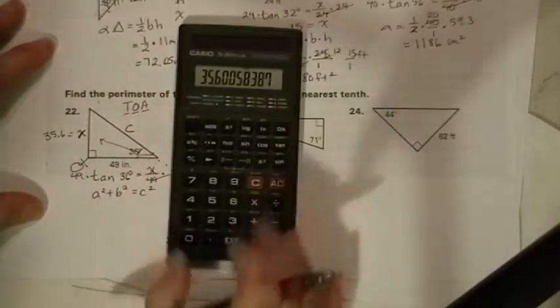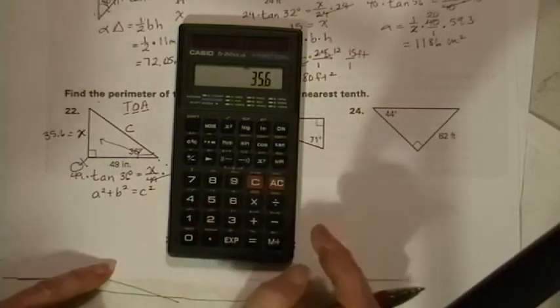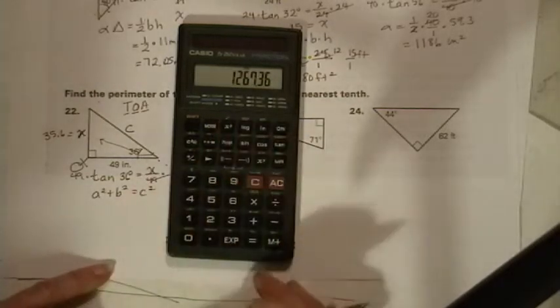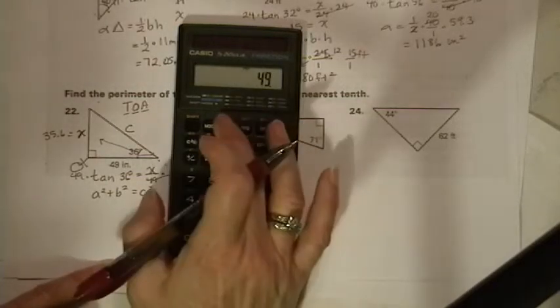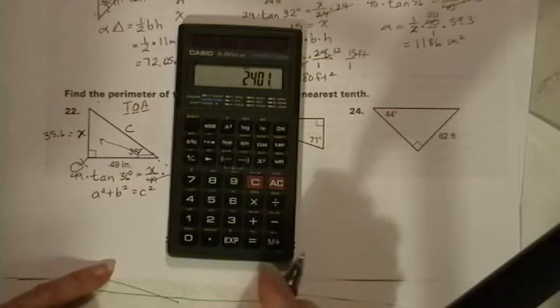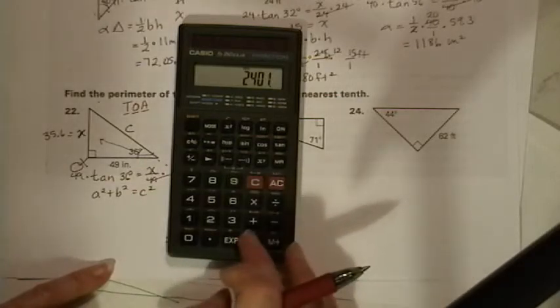So we're going to use the Casio this time. We're going to say 35.6 and we're going to press the square button plus 49. Press the square button. Now that's the square of 49. The last one was the square of 35.6 so we have to press equals.